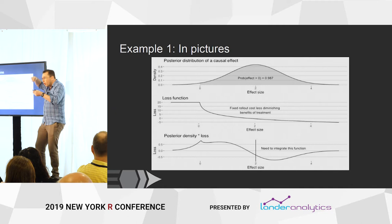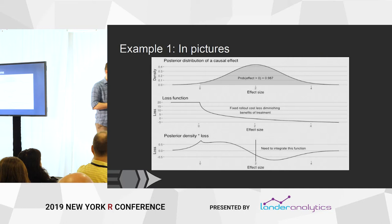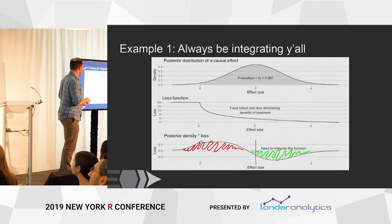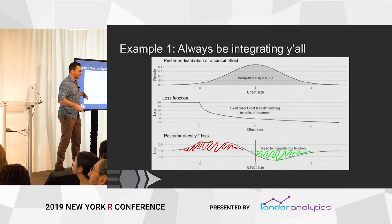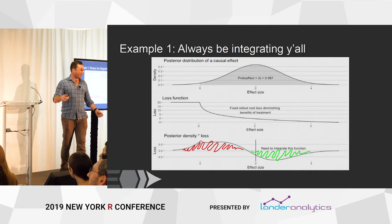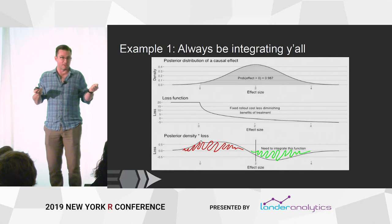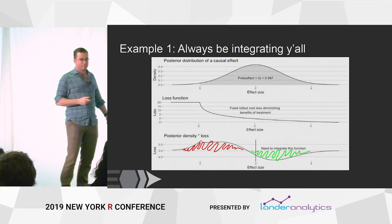I can do that for all possible treatment effect sizes, and then I simply take the average — the posterior density times loss — and that gives me what I need to integrate. The red bit is bad, that's loss. The green bit is happiness — it's additional life. Green minus red gives me my net loss. And it turns out with this parameterization, although you would take this medicine if you were a frequentist taking the modal estimator, you would not do it here — the expected loss outweighs the expected benefit from this medication.